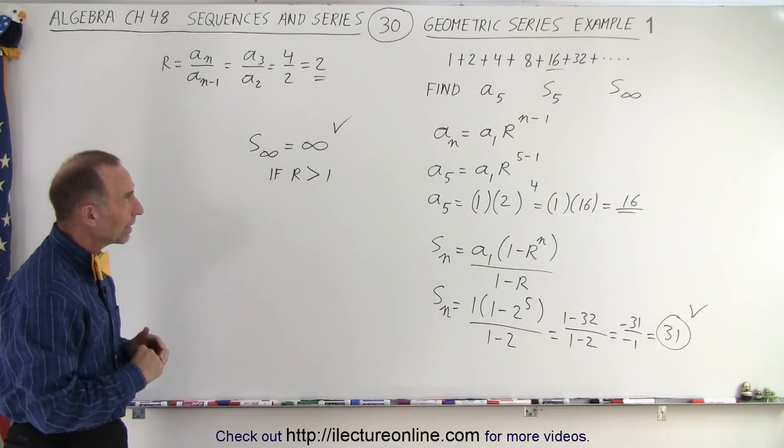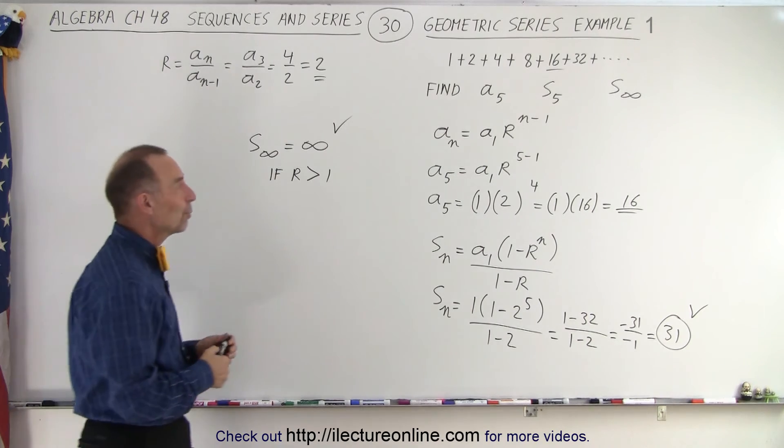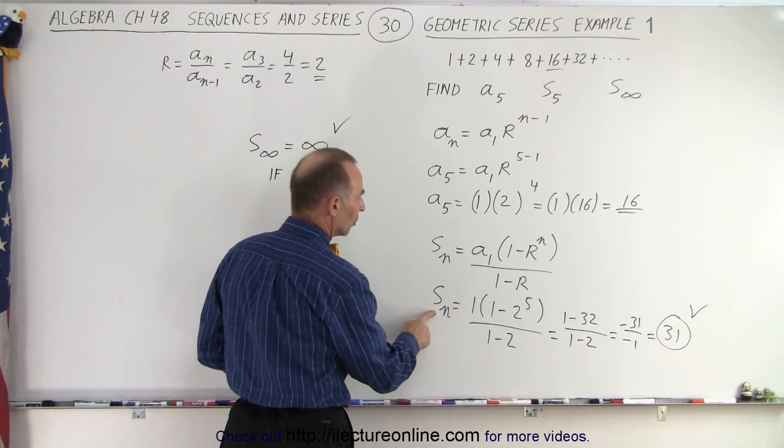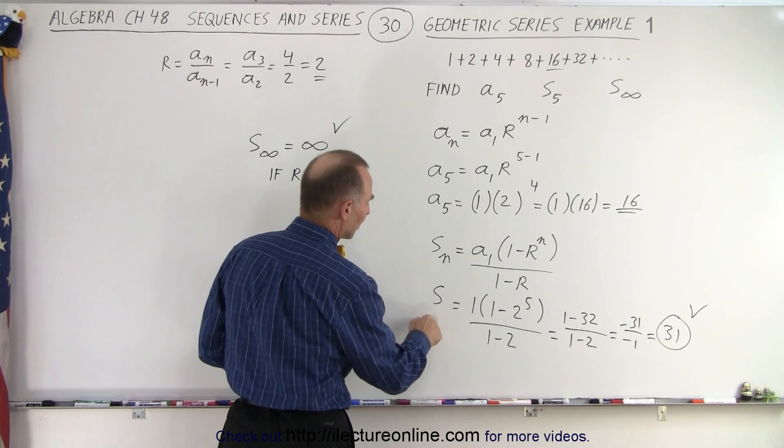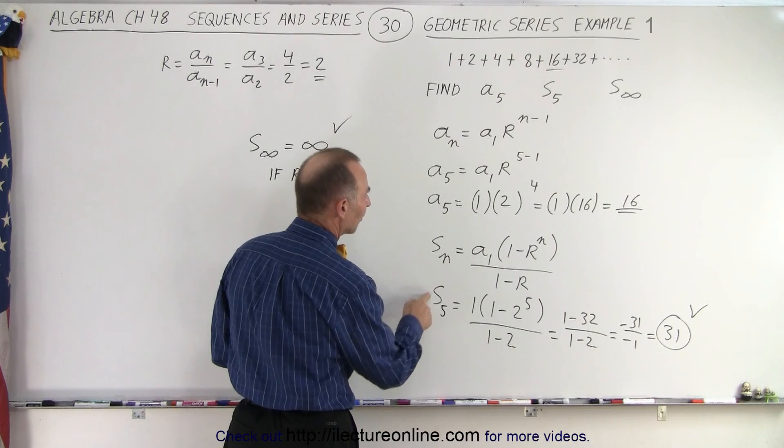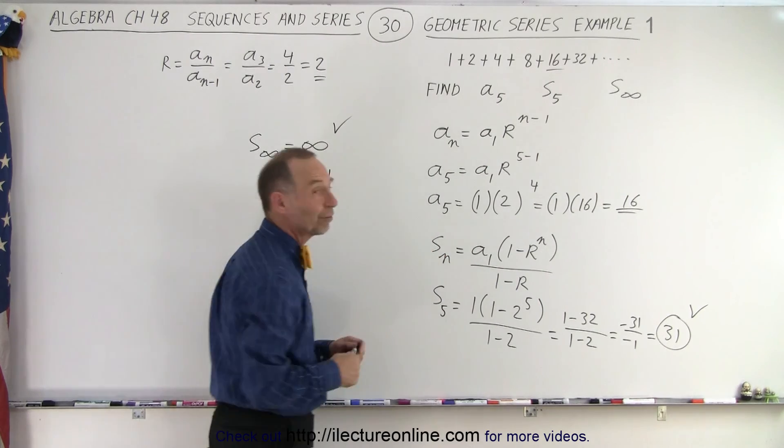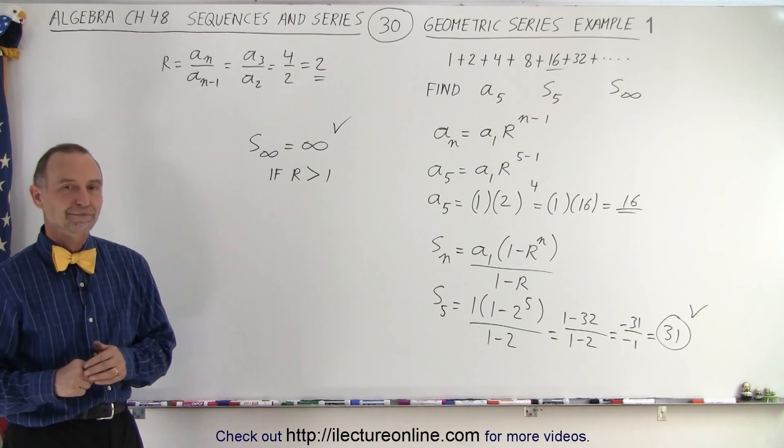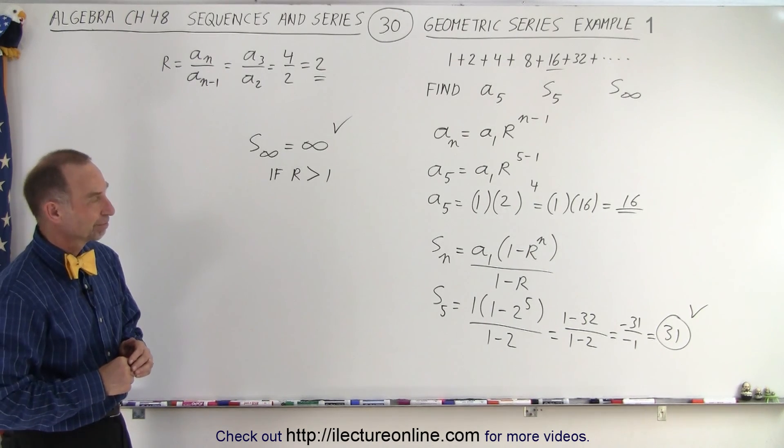That is how we solve a problem like that. If we have geometric series, we have an equation to find the nth number in the series, and we have an equation to give us the partial sum of the first N numbers in the series, and that is how it's done.